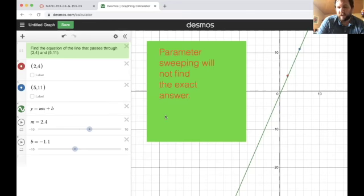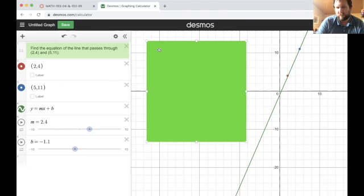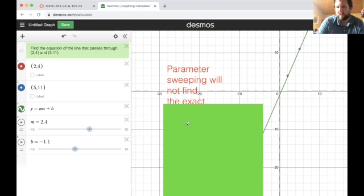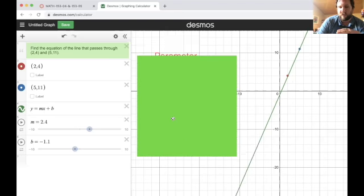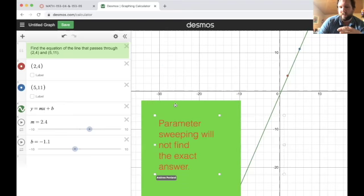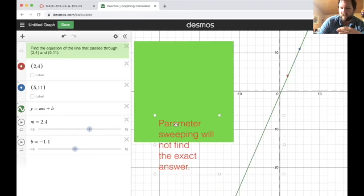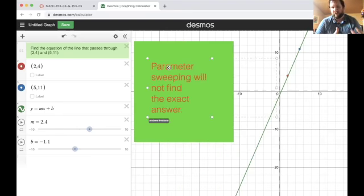So algebra has the advantage that it can find the exact answer. It has the disadvantage that it can be tedious to do by hand and it isn't always possible. Parameter sweeping is not perfect. It is a great method, but I don't want to present it in a one-sided way. What's important is that you understand the differences between these two methods and when one or the other might be appropriate.